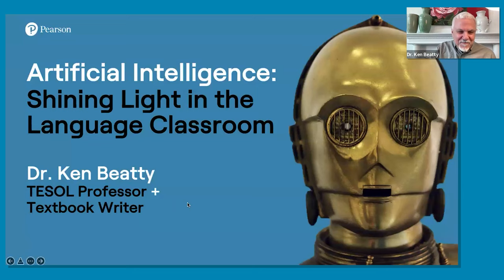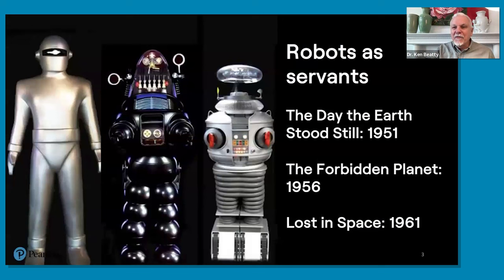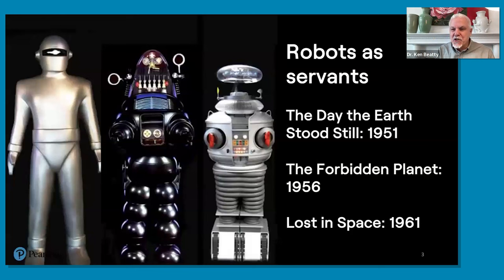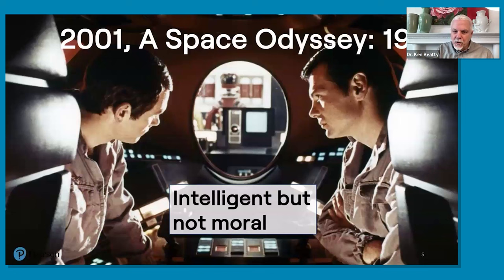So what do you think of when you think of artificial intelligence? Everyone's going to have something different. For me, a big part of it is thinking about all of the science fiction I've seen in which robots quite often are using artificial intelligence. As an older person, I saw a lot of things when I was a child about robots that sometimes go bad. The Jetsons was a big influence on me — in that role, they were inconspicuous tools, going from servants to inconspicuous tools.